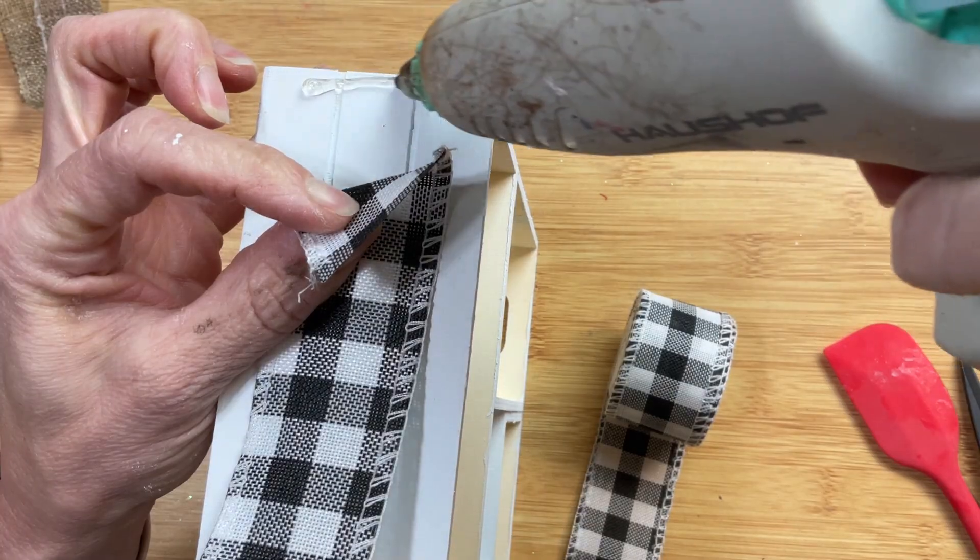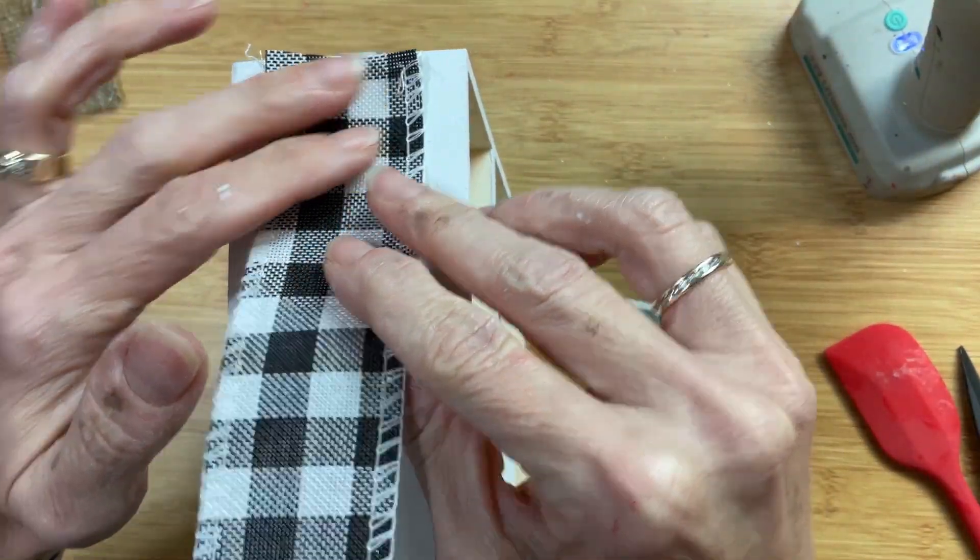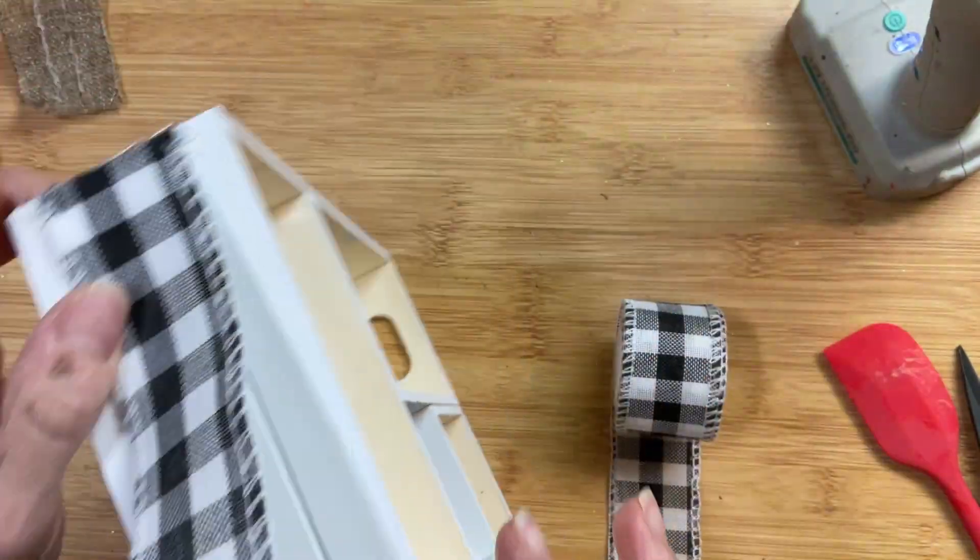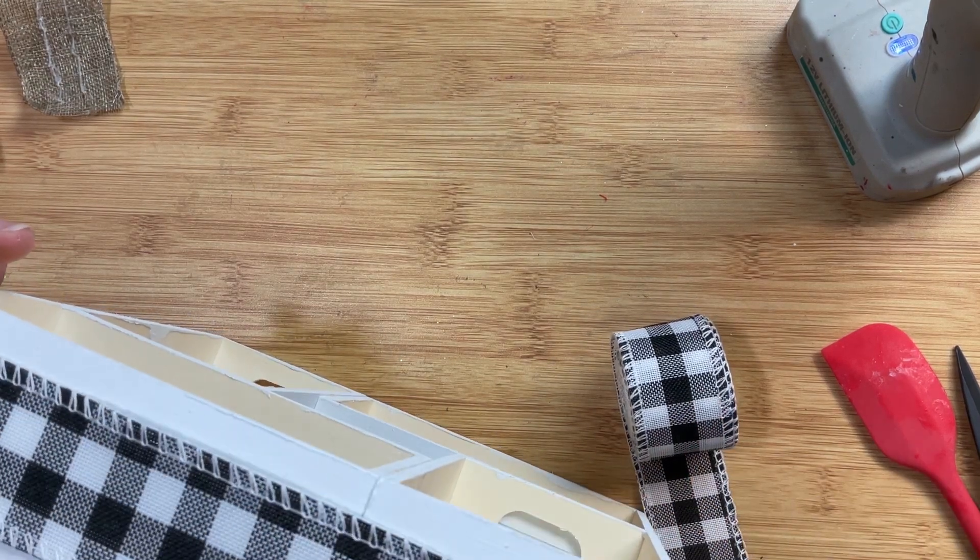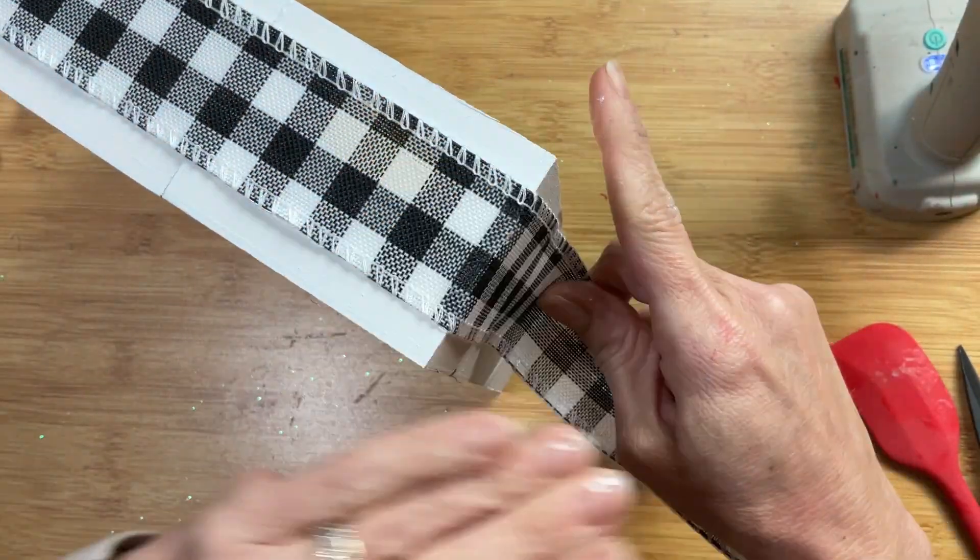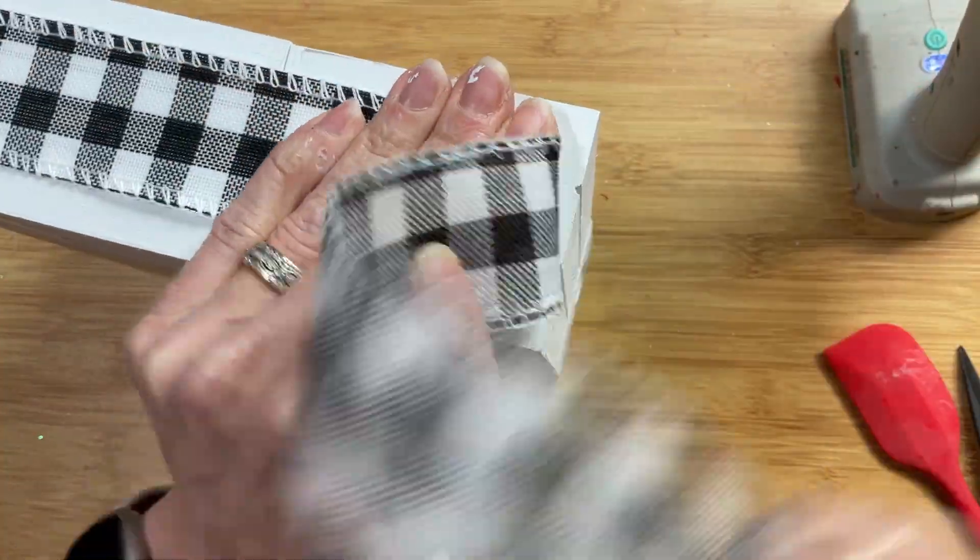And now that our crates are dry I'm going to take this thin I think it's about probably one and a half inch black and white check ribbon and I'm going to glue it around the outside of my box that I've made mostly to cover up the holes that are on the short ends of the crates. So this is just going to give a nice uniform look around the outside of our box.